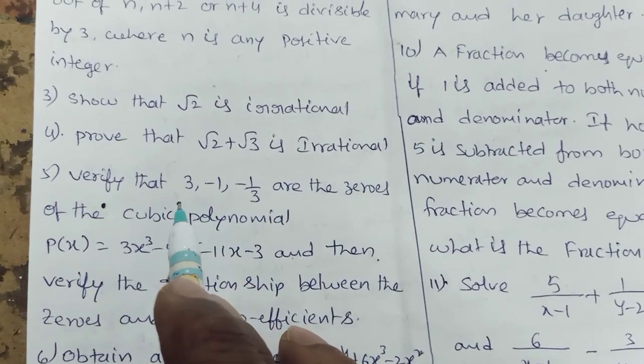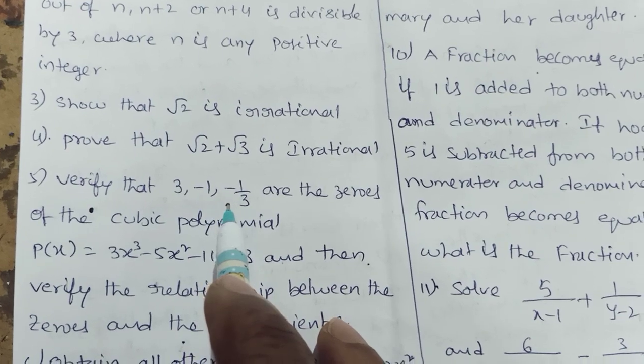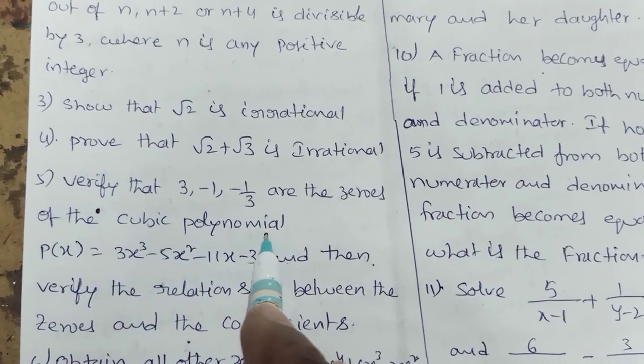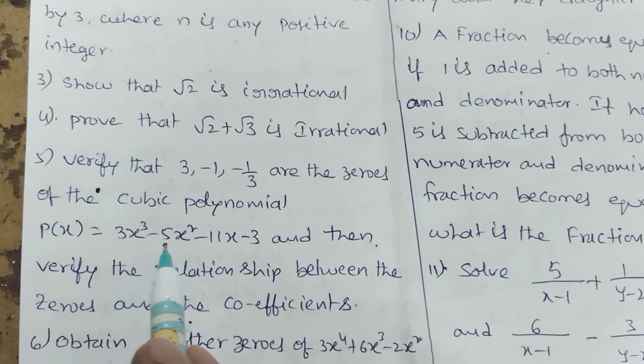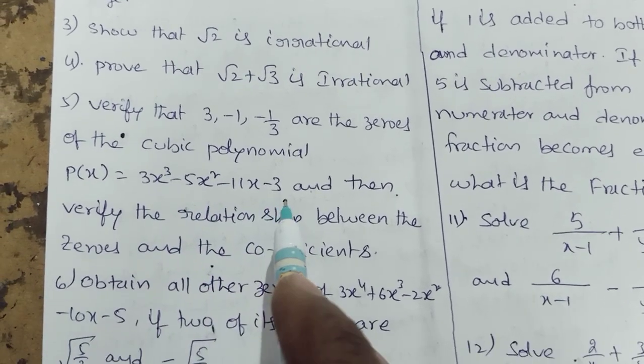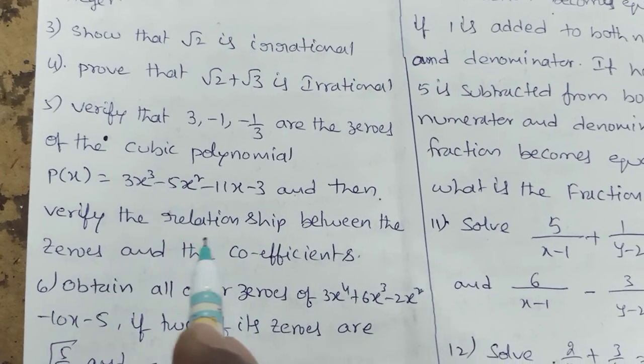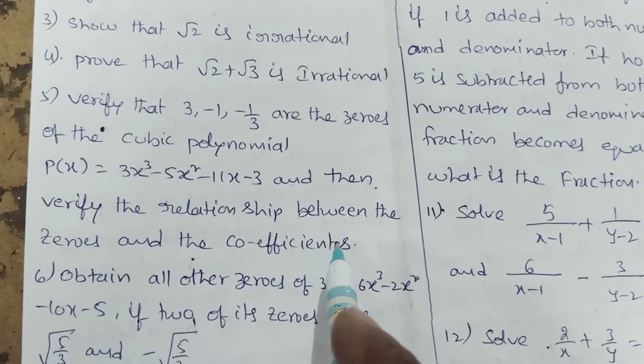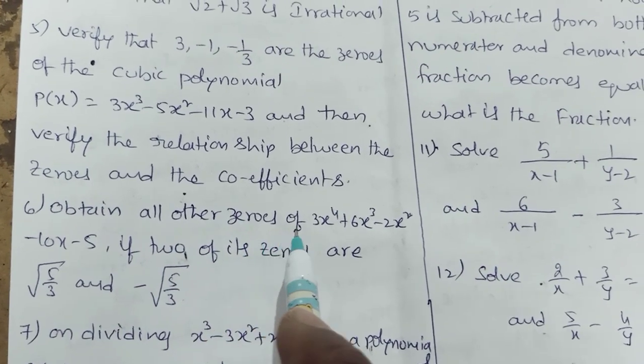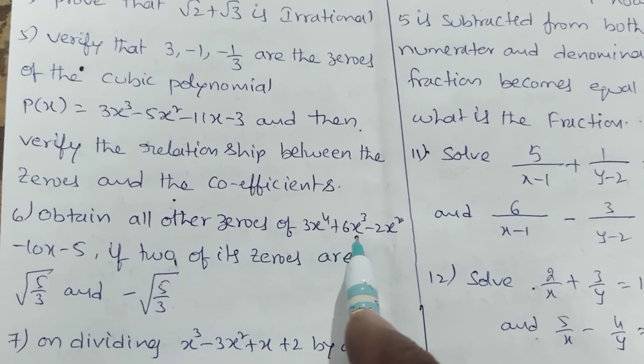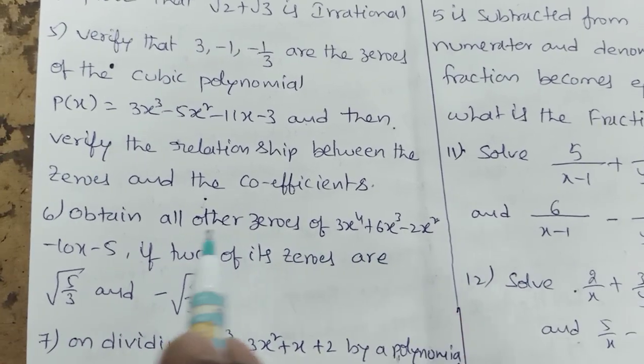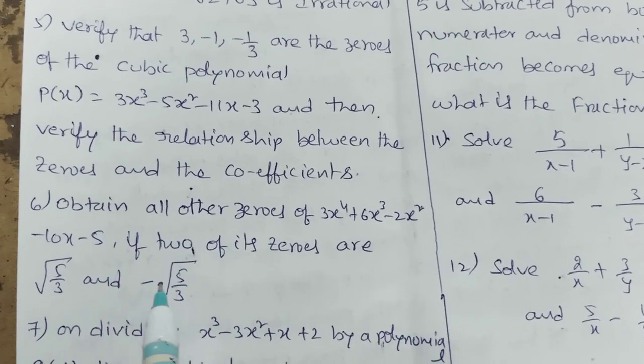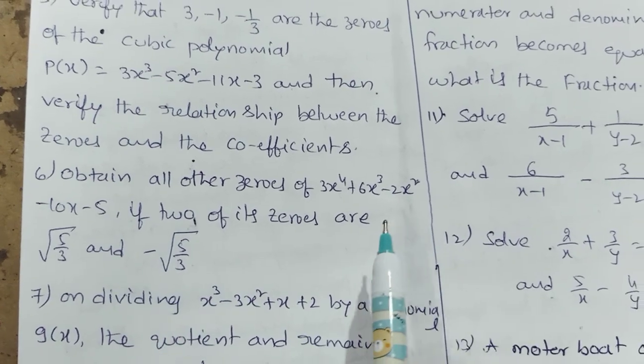Polynomials. Verify that 3, minus 1, minus 1 by 3 are the zeros of the cubic polynomial P of X equal to 3X cube minus 5X square minus 11X minus 3 and then verify the relationship between the zeros and coefficients.